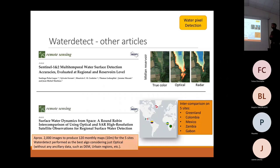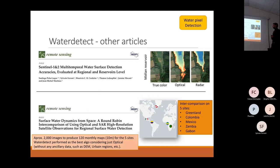Two thousand images were processed to produce 120 monthly maps in full resolution of 10 meters. Water Detect performed as the best considering just optical methods.